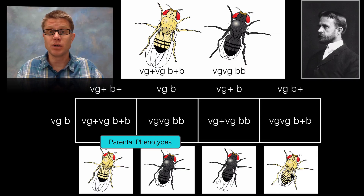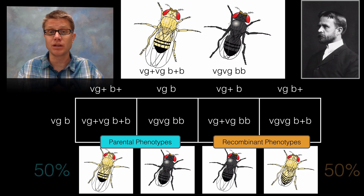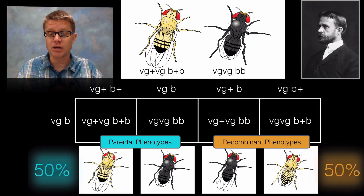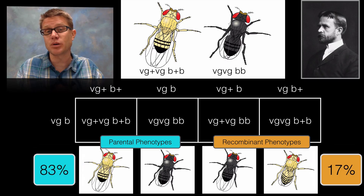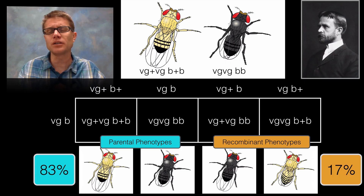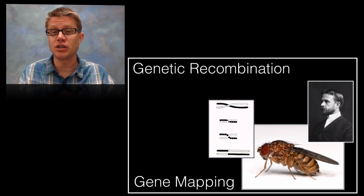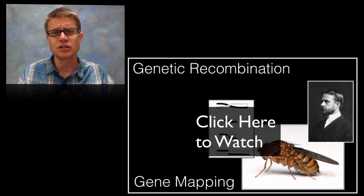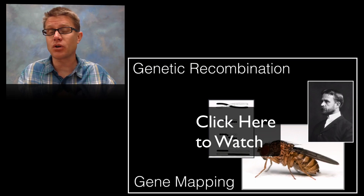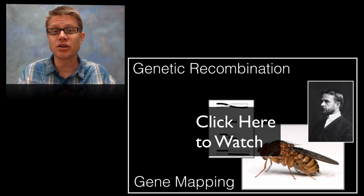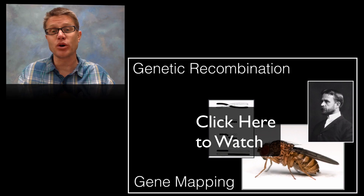Morgan expected 50% parental types and 50% recombinants. But when he actually did the cross, that's not the number he got. What he got was 17% recombinant and 83% parental types. So Mendel was wrong — or his model didn't go deeply enough. In the next video on genetic recombination and gene mapping, Morgan will show not only that genes are carried on chromosomes, but the importance of crossing over in producing those recombinants. And that's chromosomal inheritance — understanding genetics not just at the level of Mendel, but also at the level of Morgan.